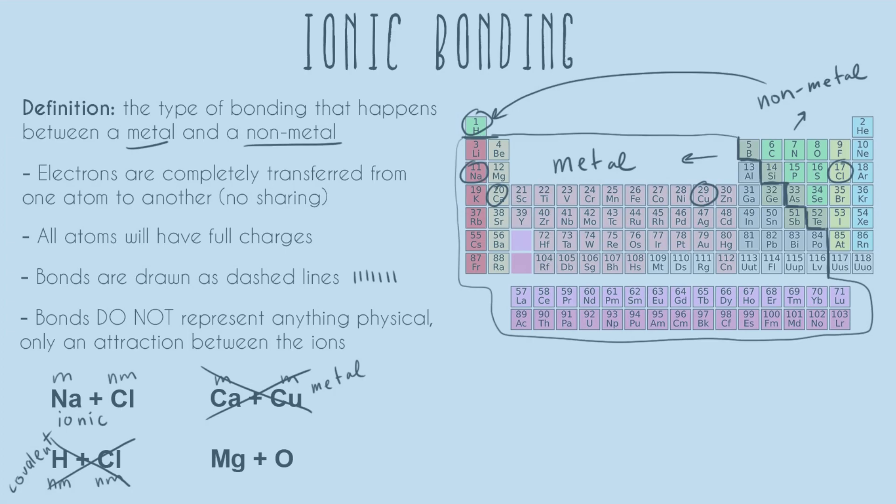All right, and so last but not least, we have magnesium. That's over here on the left-hand side, number 12. That's a metal. And we have oxygen up here on the right-hand side, number 8. That's a non-metal. So this will be ionic.